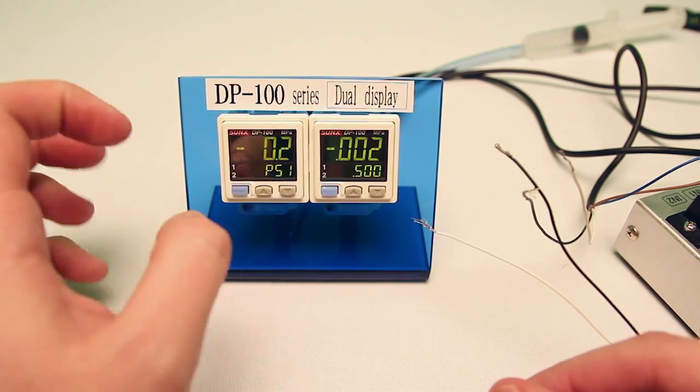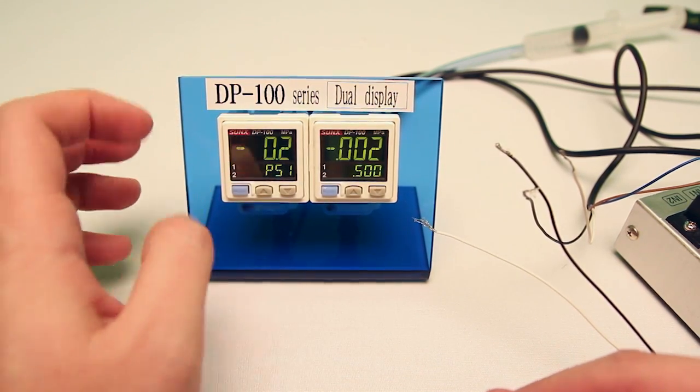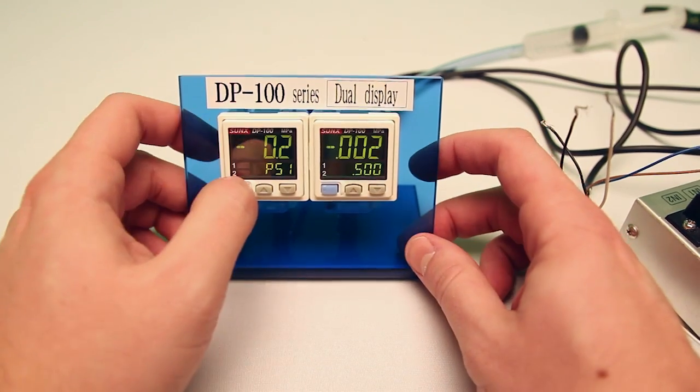First, I have to designate which sensor is my primary or main sensor, and I do that through the pro mode.